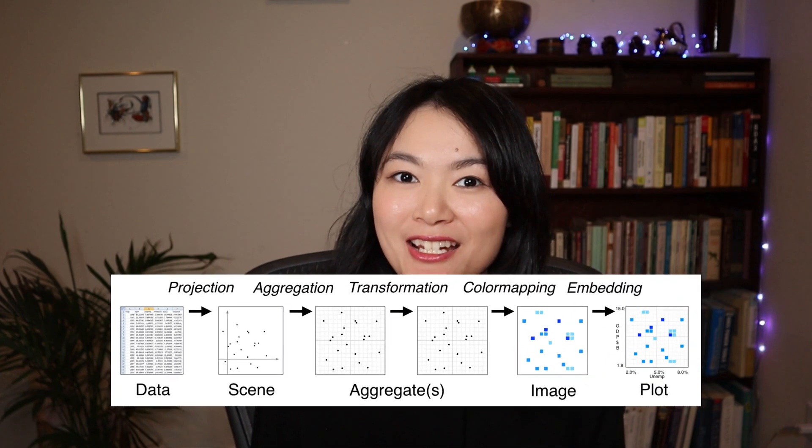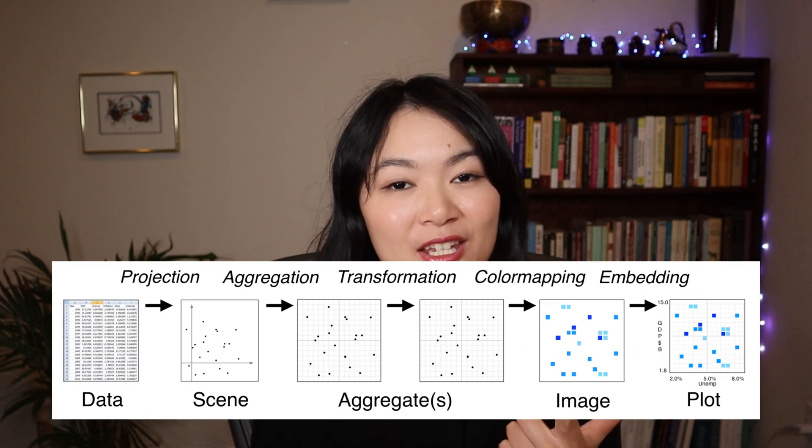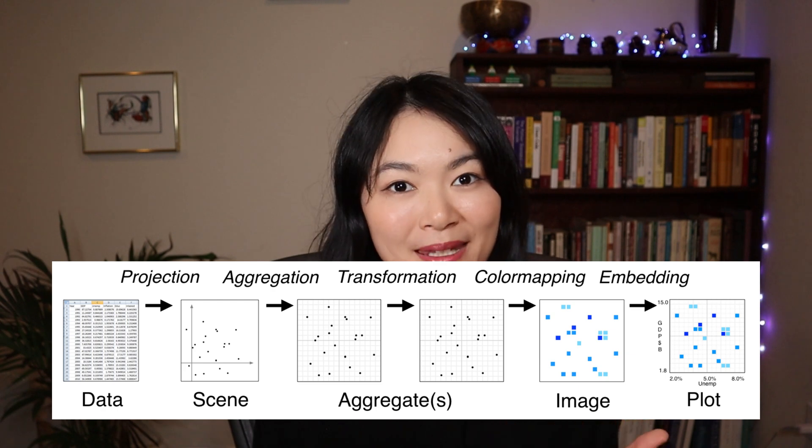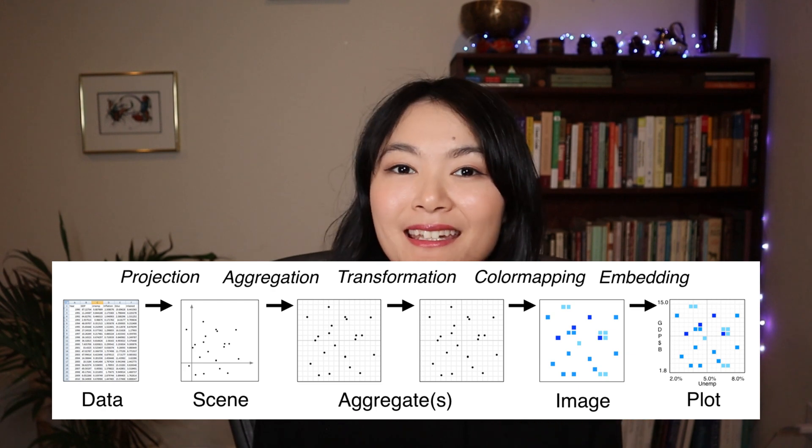How does DataShader work exactly? DataShader turns your data into a plot using a five-step pipeline: projection, aggregation, transformation, color mapping, and embedding. I'm going to break down my example into those small steps so that you can see exactly what DataShader is doing under the hood.